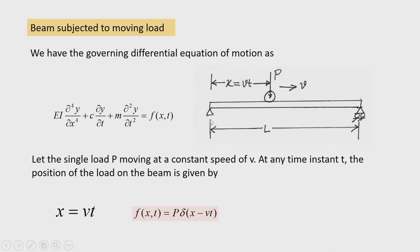Now let us first take a beam subjected to moving load. You can see here a beam — I have taken a simply supported beam, but for any other type of beam this formulation is applicable. Consider a single load moving from left to right; that is the direction of movement. A similar procedure is also applicable when it moves from right to left. V is the velocity at which the load moves or travels over the beam.